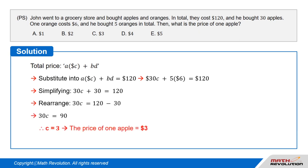Rearranging, 30C equals 120 minus 30, and 30C equals 90, or C equals 3.